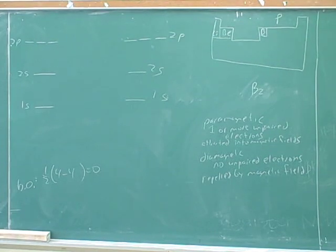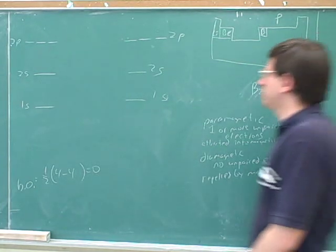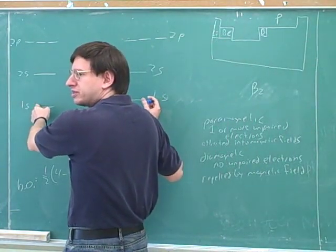When we get to the p's, do we write it as a pi bond yet? Now we're going to start using pi bonds. Let's build that up. What orbitals we get from the overlap between the 1s orbitals?